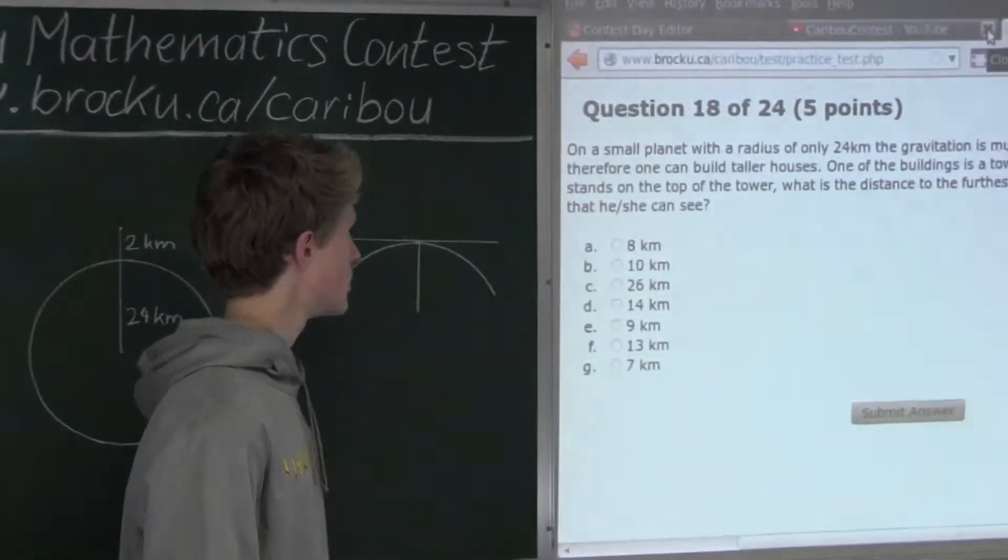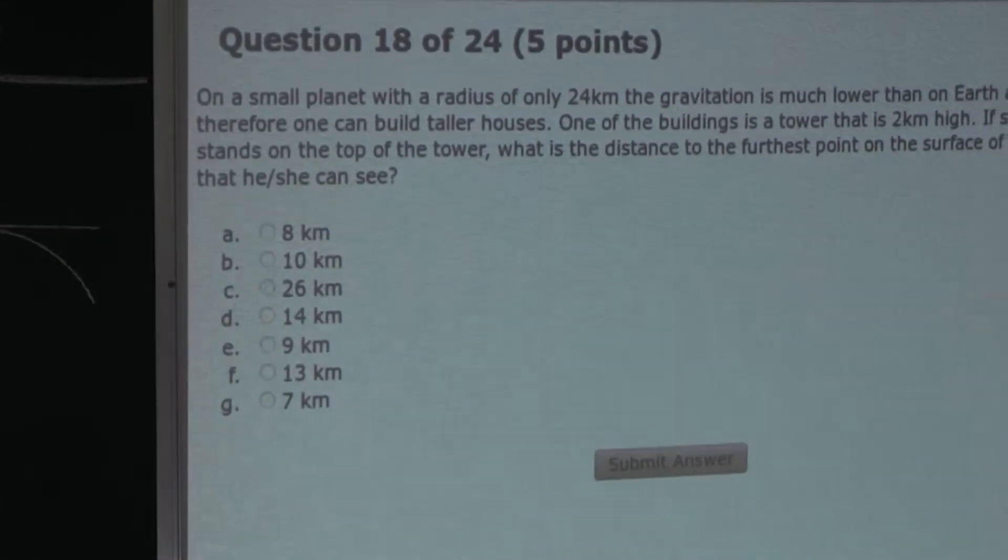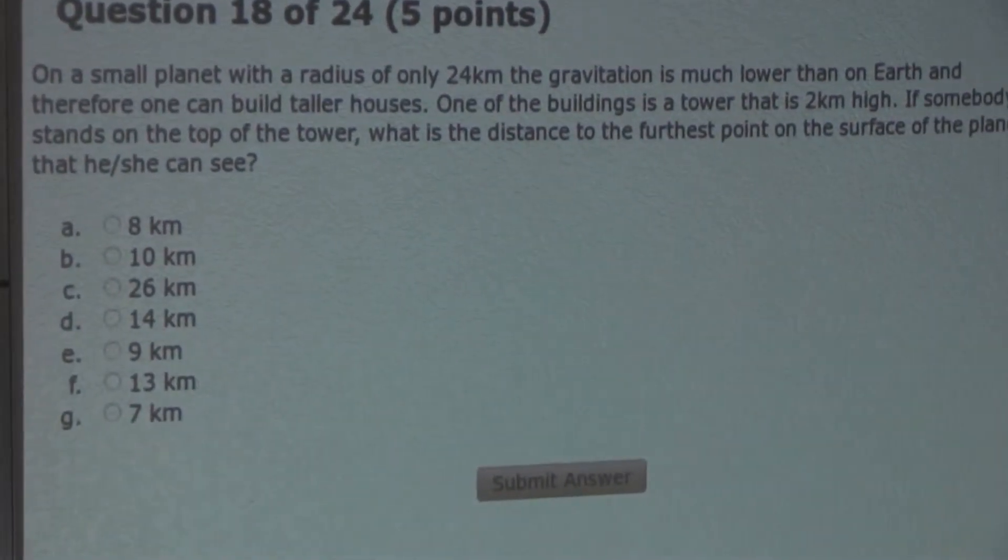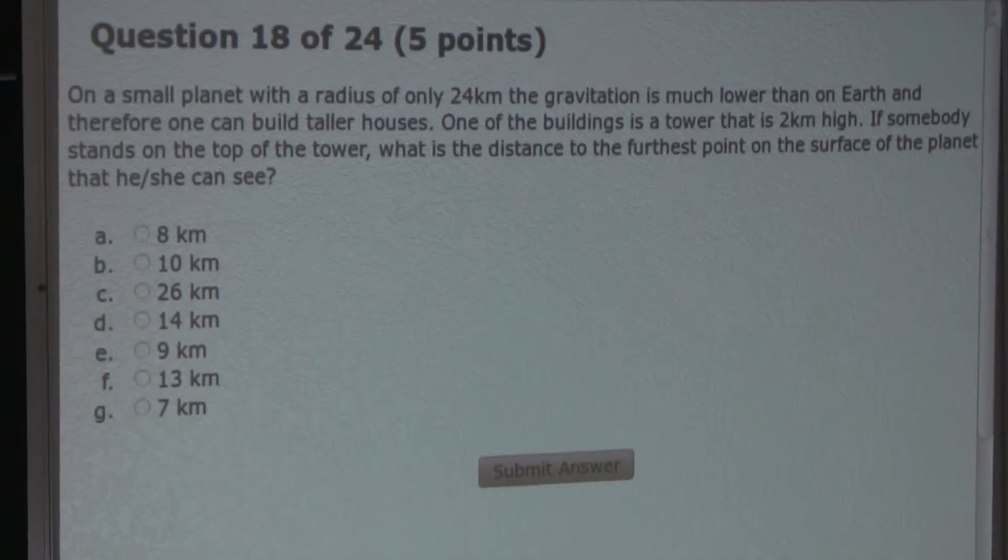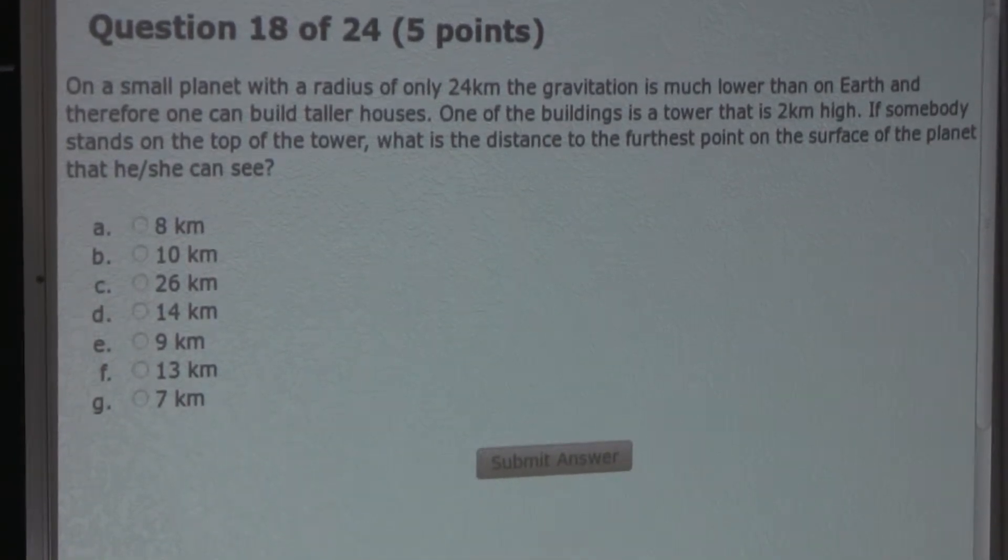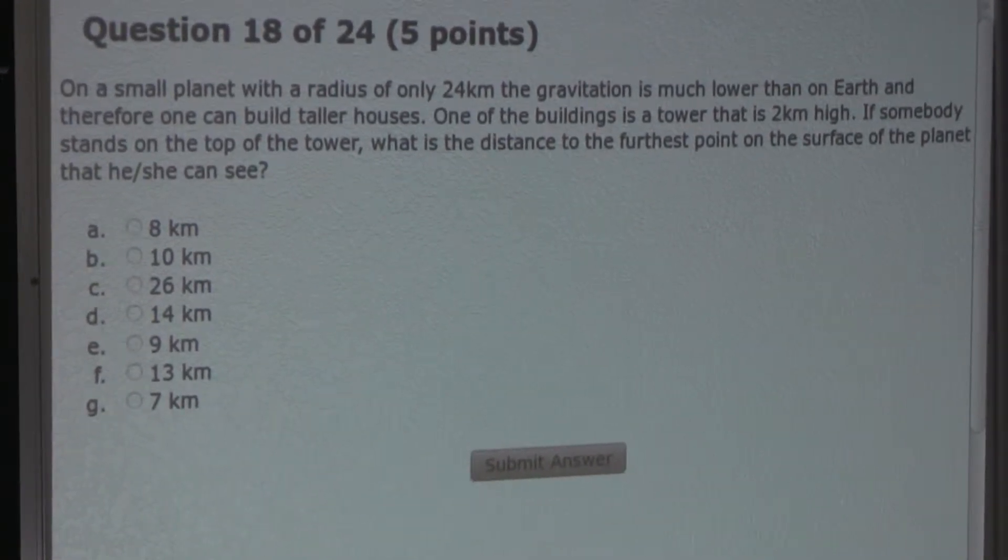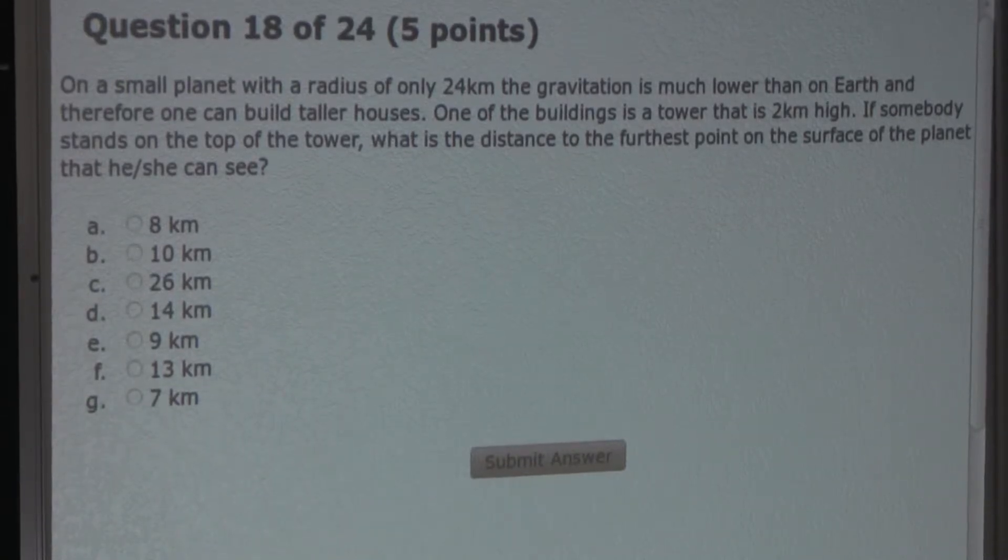So the question is: on a small planet with a radius of only 24 kilometers, the gravitation is much lower than on Earth and therefore one can build taller houses. One of the buildings is a tower that is 2 kilometers high. If somebody stands on the top of the tower, what is the distance to the furthest point on the surface of the planet that he or she can see?